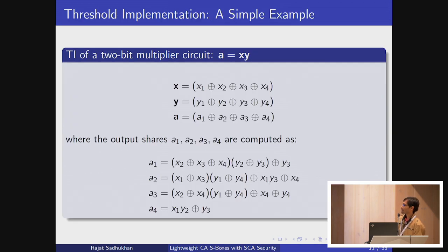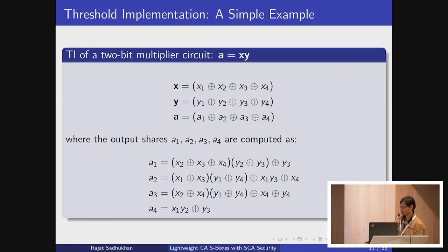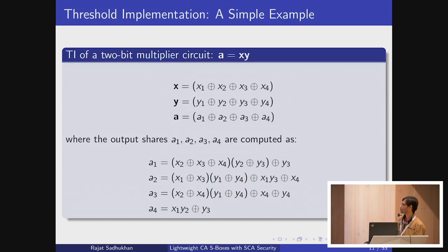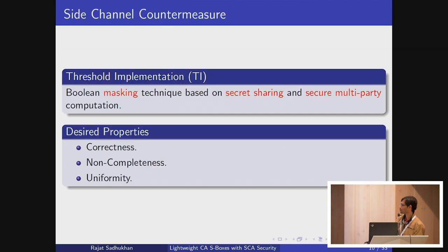Taking an example of an AND gate with two inputs: we share the X and Y inputs into four shares, and we get the output also as four shares. We have four output functions implemented in different modules to get the final output. This example follows all three properties — correctness, non-completeness, and uniformity. If you do an XOR sum of all the outputs, you fulfill these three properties.